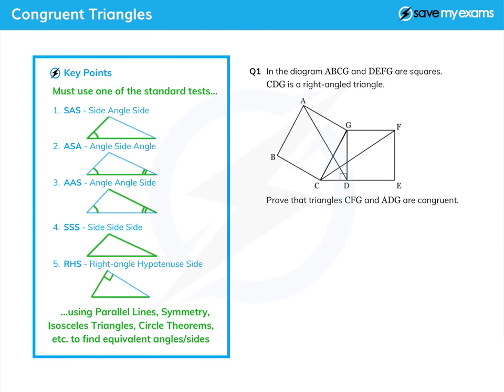In this tutorial, we're going to look at tests for congruence. Congruent triangles are exactly the same, same size, same shape, and there are five standard tests. We must use one of those. Don't worry, that sounds like a lot, but actually we'll see that some of them are pretty much the same.